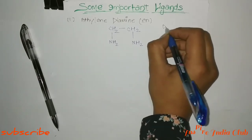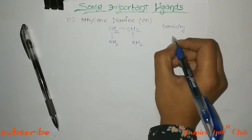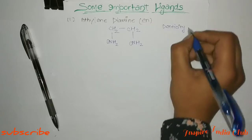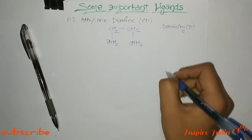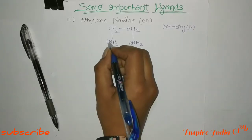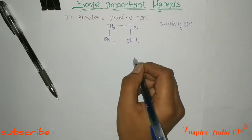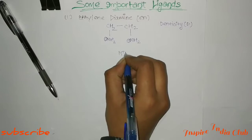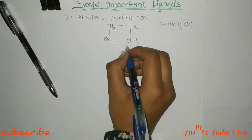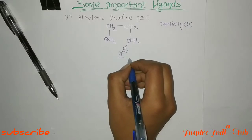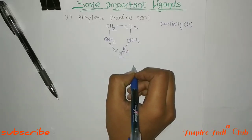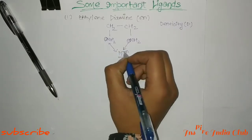Denticity is the number of lone pairs donated by the ligands to the complex forming metal. Yaha pe aap dhekhenge ki each nitrogen has a lone pair, and nitrogen donates its lone pair to the complex forming metal M. Similarly the other nitrogen also donates its lone pair to the complex forming metal, forming a ring.